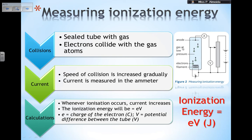Here I have my fluorescent tube with a gas at low pressure, electrons in a filament, and an anode. The electrons travel from the filament to the anode. I have an ammeter to measure the current and a voltmeter to check the potential difference.